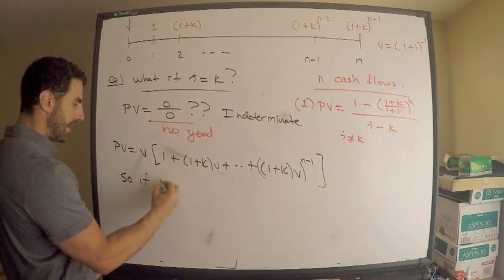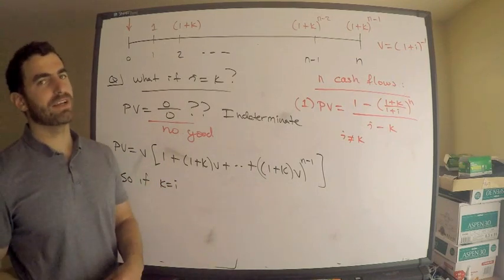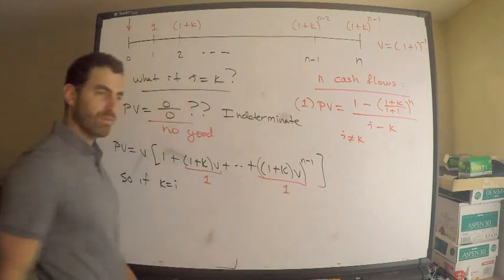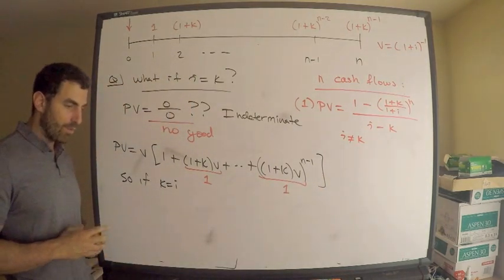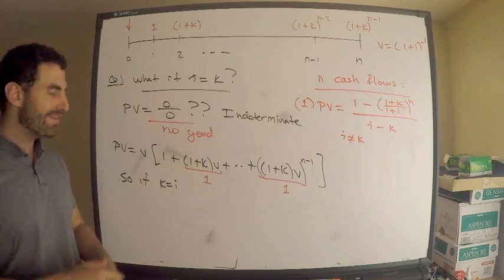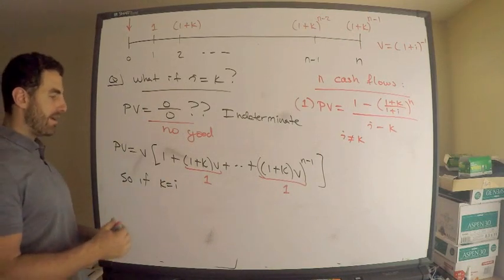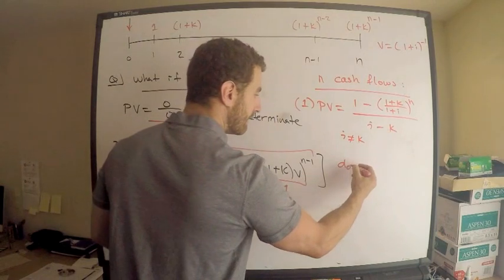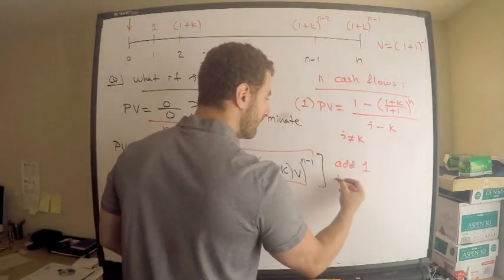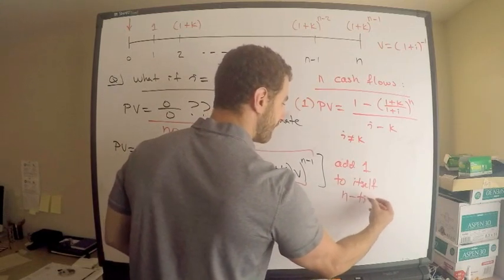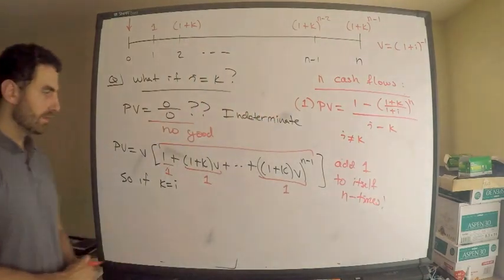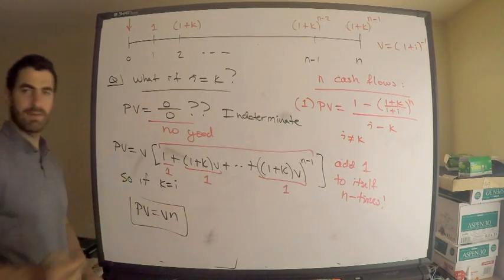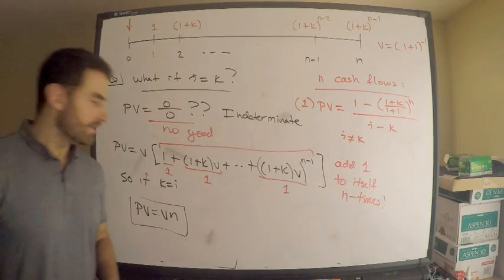If i equals k, think about it: what is the common ratio (1+k)·v? Well, v = 1/(1+i) = 1/(1+k), so (1+k)·v = 1. Every term in the bracket equals 1. I've seen problems like this, where the geometric growth factor k coincides with the effective interest rate. So I'm adding 1 to itself n times, which gives n. Therefore the present value equals v·n.